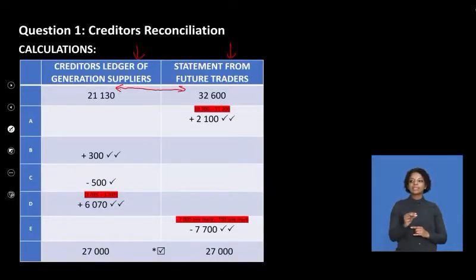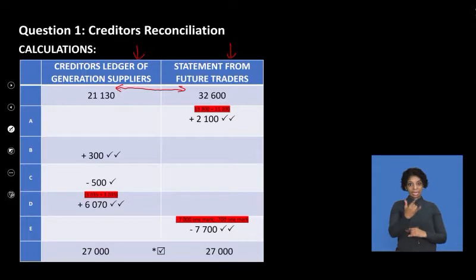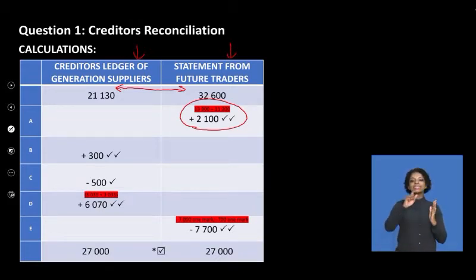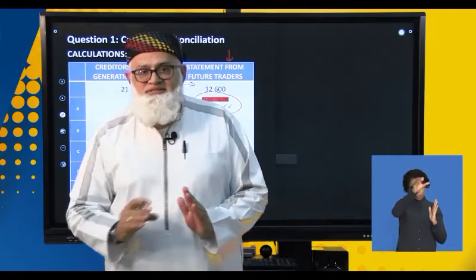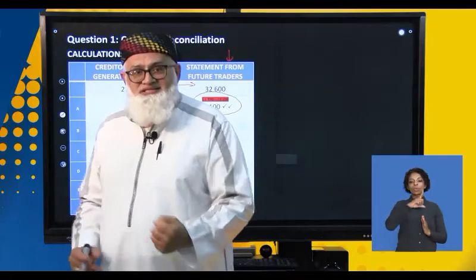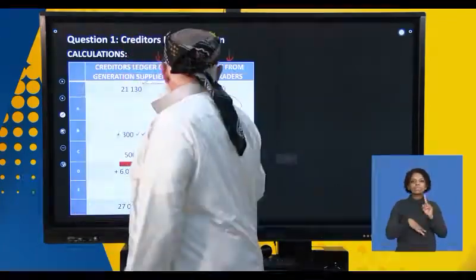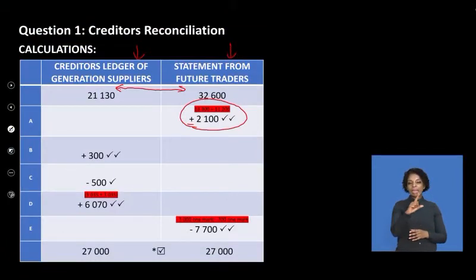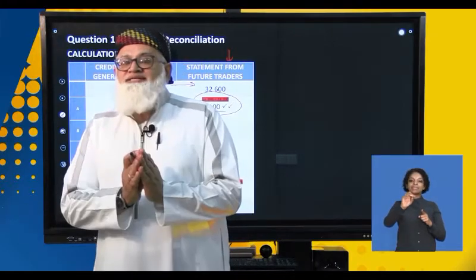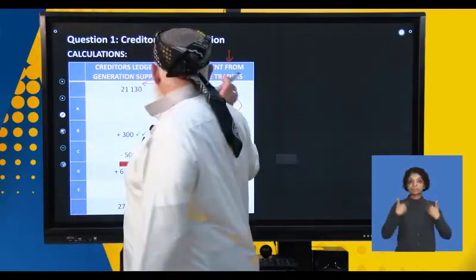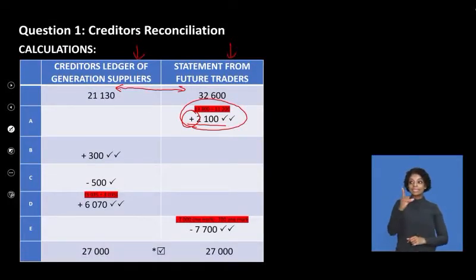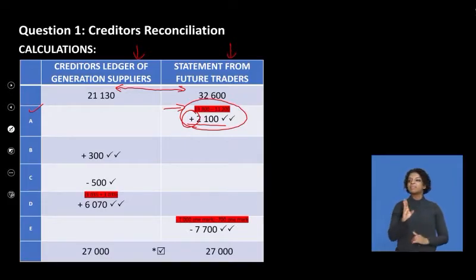The statement was recorded as 11,200 instead of 13,300 — a difference of 2,100. The error is in the statement, so I correct it in my statement column. The statement was undercast by 2,100, so I add it to my statement. Where's the error? On the statement. Where do I correct it? In the column that deals with the statement. That correction for item A is done.